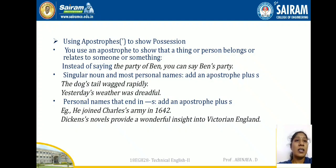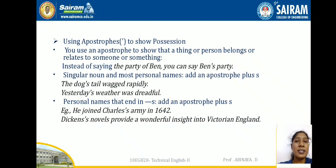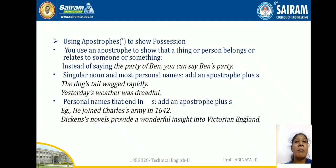Using apostrophes to show possession: you use an apostrophe to show that a thing or person belongs to or relates to someone. For singular nouns and most personal names, add apostrophe plus S. For example: 'the dog's tail,' 'yesterday's weather.' Instead of saying 'the party of Ben,' you say 'Ben's party.'